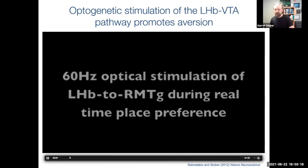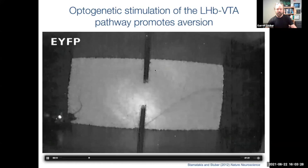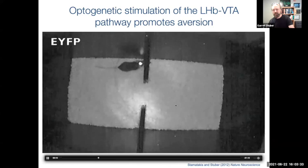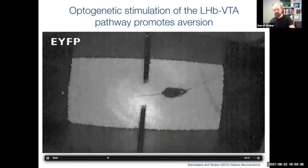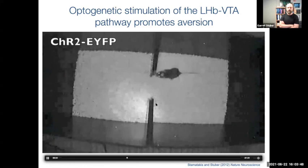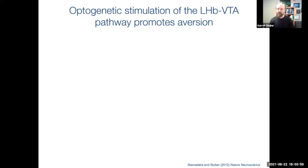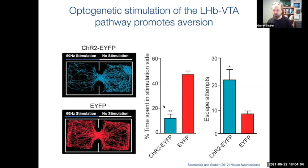Alice Stamatakis, when she was a graduate student in my lab, did studies using optogenetic stimulation of the habenula-to-VTA/RMTG pathway. In a real-time place preference assay, animals can freely choose to spend time on the side of a box where they receive stimulation or not. A control animal shows no preference, but when we stimulate the lateral habenula to VTA projections, this was highly aversive — the animal turned around and left that side of the chamber immediately. Around the same time, Stephane Lamel published something very similar, confirming this pathway is highly aversive.